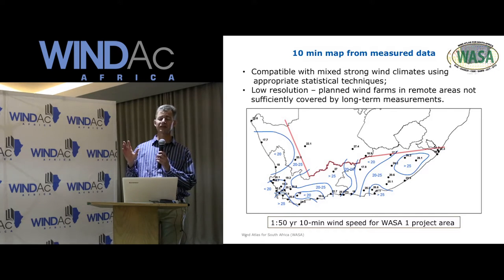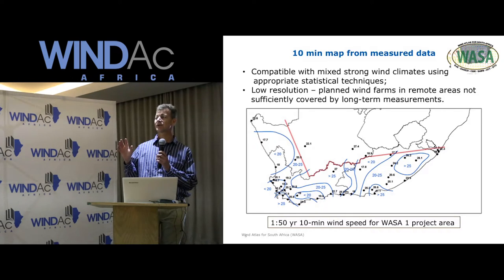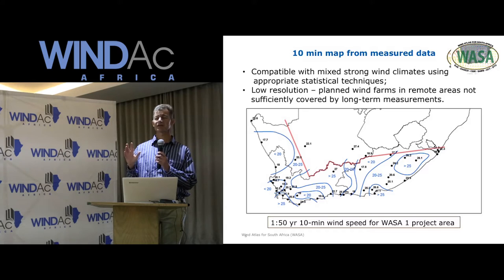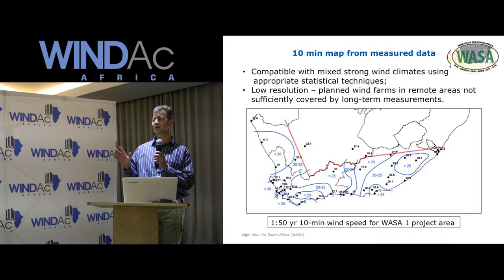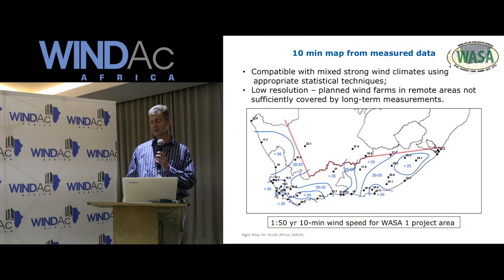As you can see, the resolution is very low. The planned wind farms in remote areas are not sufficiently covered by the long-term measurements that the weather service is doing. That is the 1-in-50-year 10-minute wind speed for the project area.